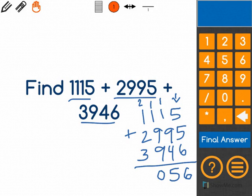Then 2 plus 1 is 3, 3 plus 2 is 5, and 5 plus 3 is 8. And I put my comma. So I know the answer is 8,056.